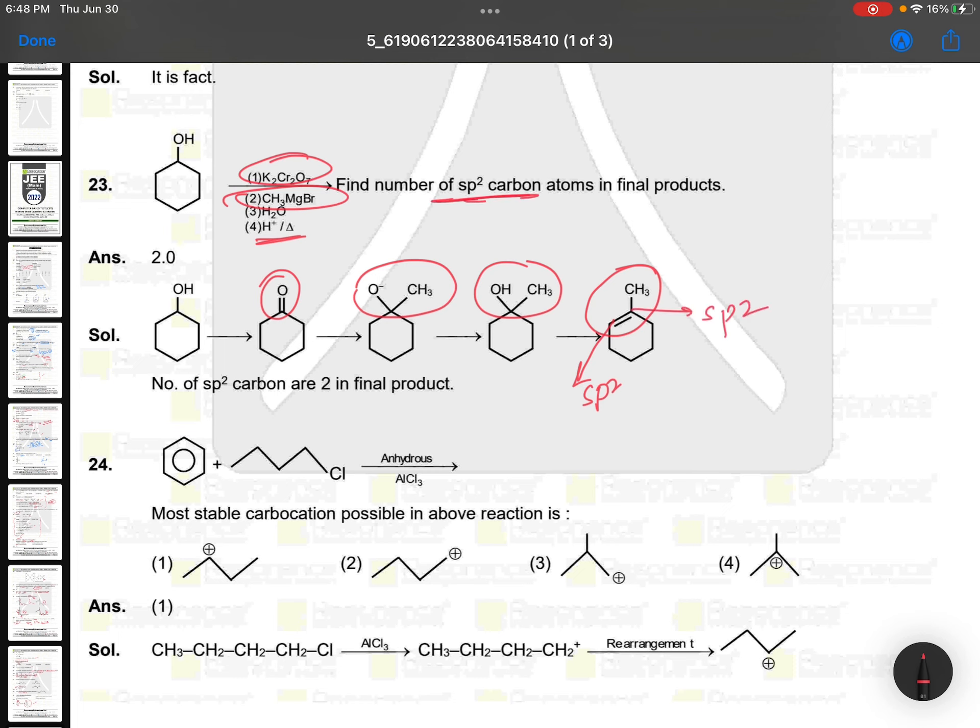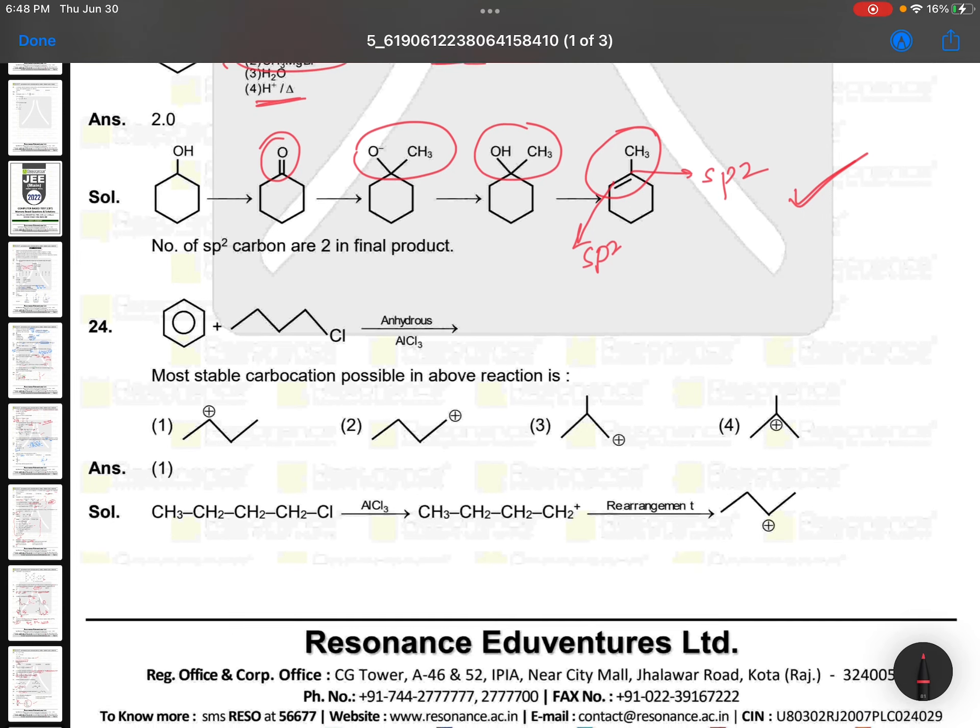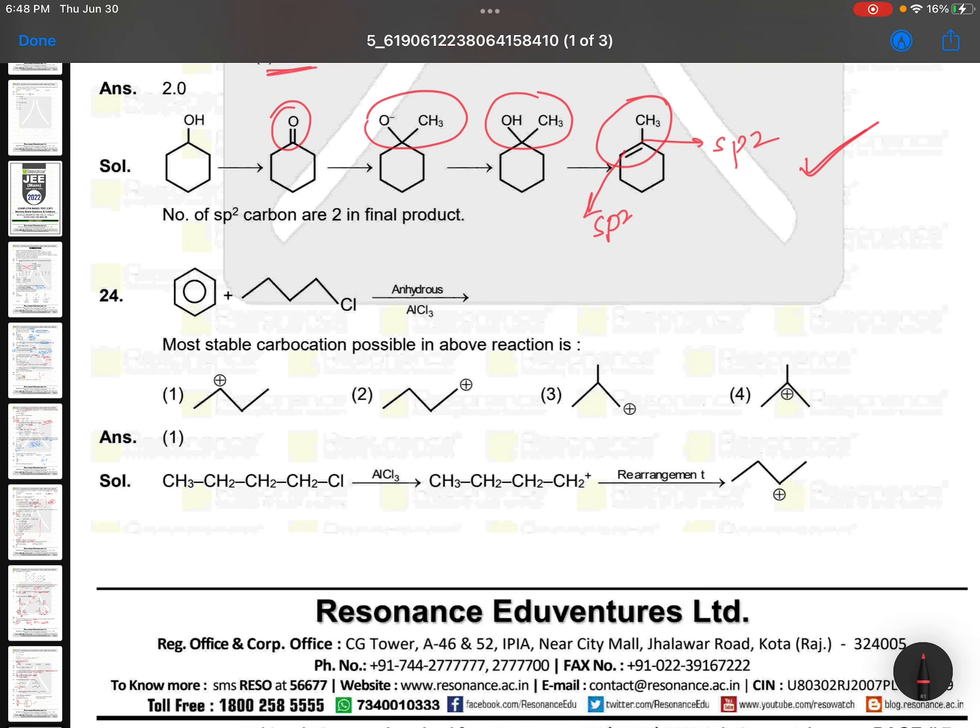And let's say AlCl3 gives you this. Chlorine will be out, so it gives you one plus charge, primary carbocation. Maximum to maximum one hydride shift will take place to secondary. Nothing like this. Methyl shift won't take place.